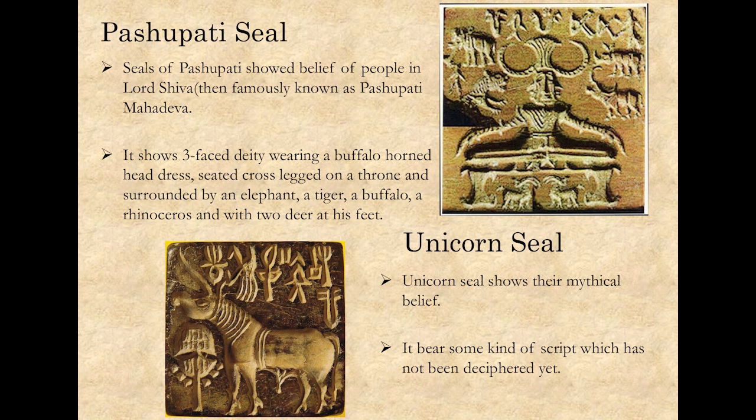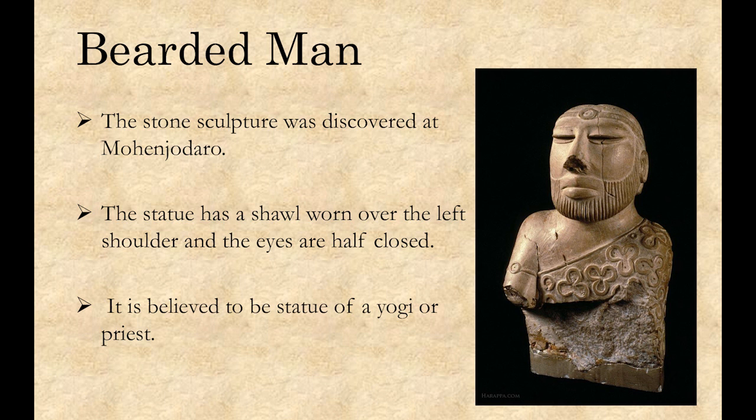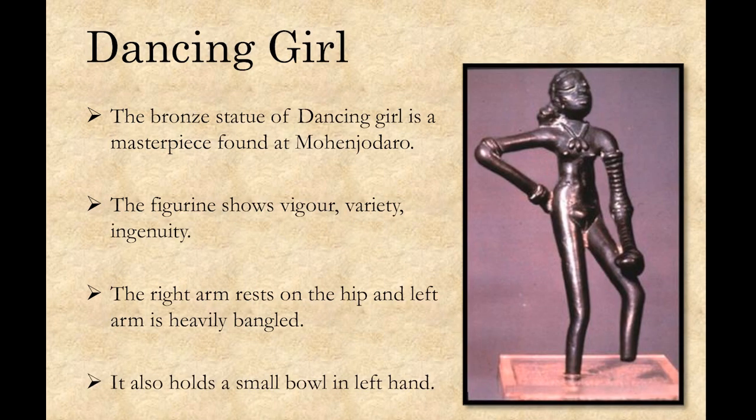The next source is statues. The first is the stone sculpture of a bearded man, discovered at Mohenjo-daro. Historians believe it could be a statue of a yogi or priest, as the eyes are half closed suggesting he might be in meditation. The next statue is a bronze statue of a dancing girl, also found at Mohenjo-daro. This masterpiece throws light on simplicity, culture, originality, the variety of ornaments used during that period, and the lifestyle of people during those days.